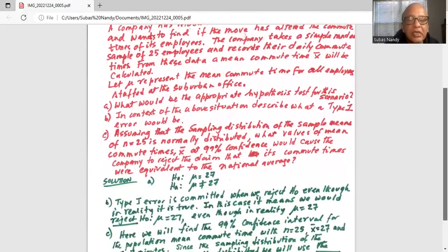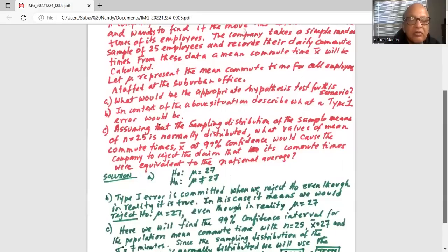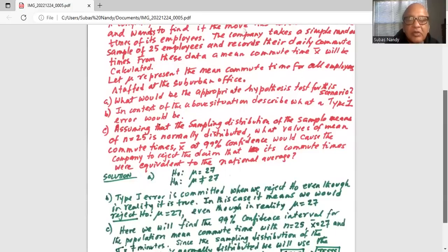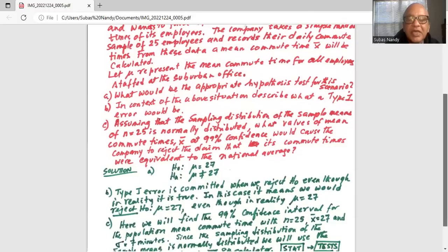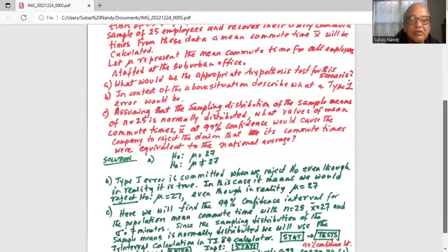Part c. Here we will find the 99 percent confidence interval for the population mean commute time with n equal to sample size 25 x bar equal to 27 and sigma equal to 7 minutes.